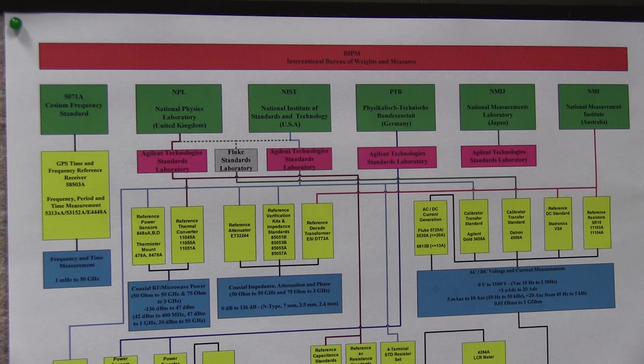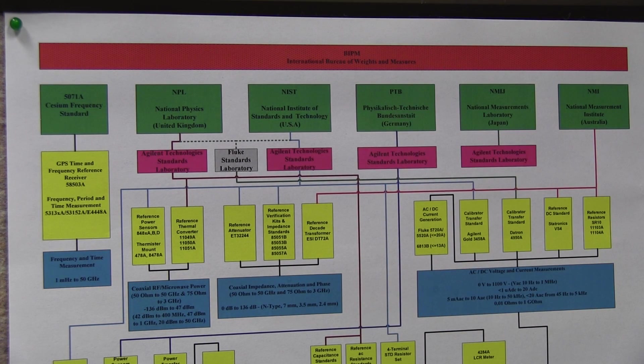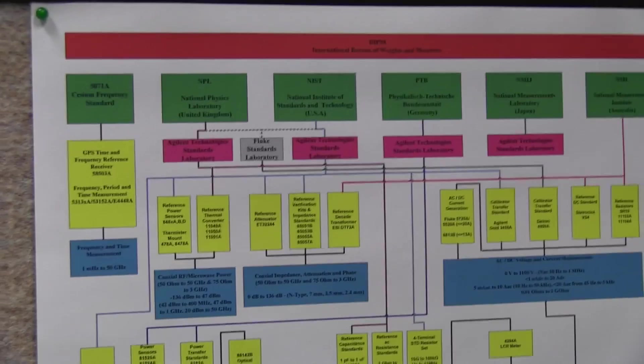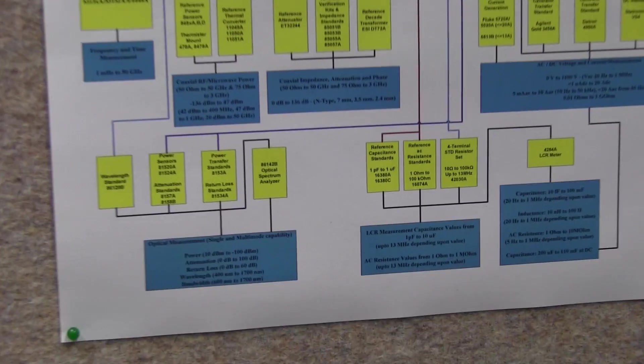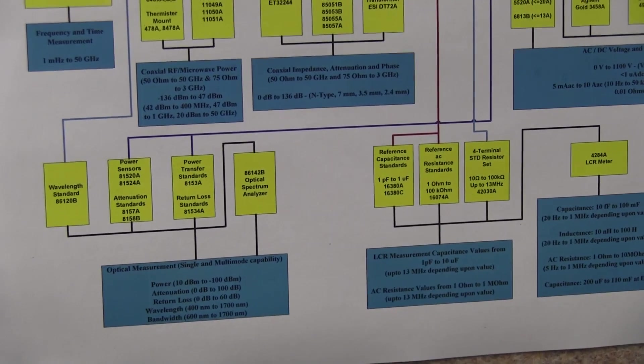So that's one traceability path we have. We have another traceability path to NIST, which is the National Institute of Standards and Technology in the USA. We also go through Germany. For what? Mainly for power sensors, light wave power sensors go to Germany.